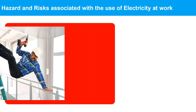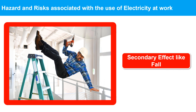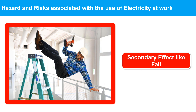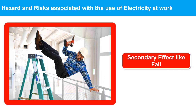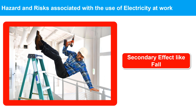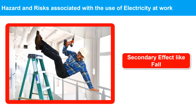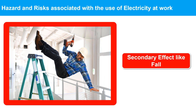Secondary effects include, for example, a person falling from height, or dropping tools and objects. Accidents involving electricity frequently involve two or more of these hazards at the same time.